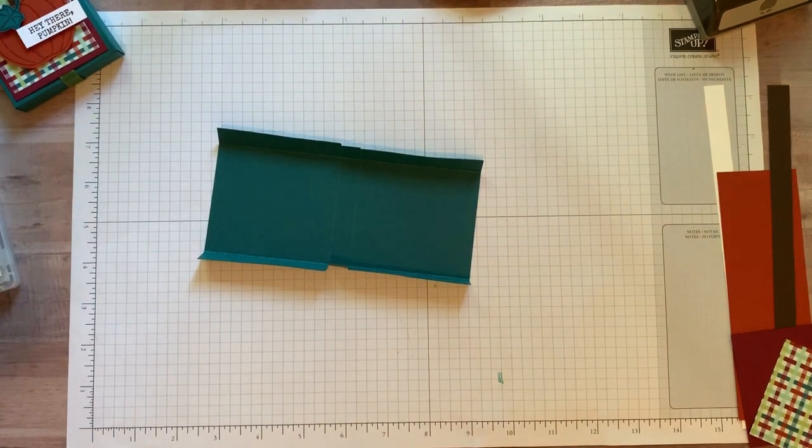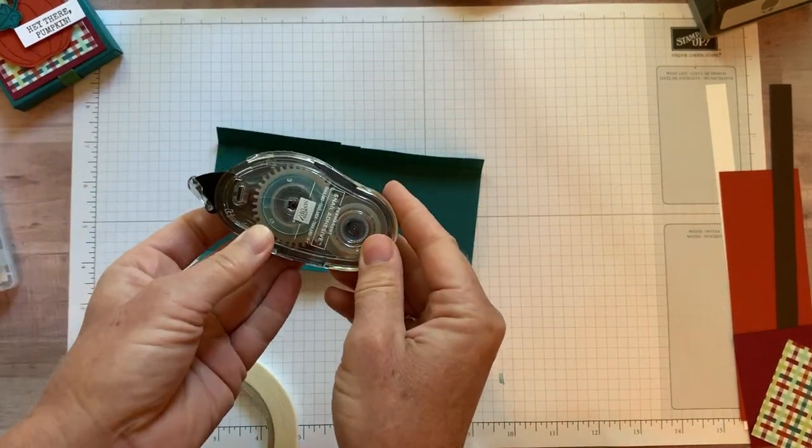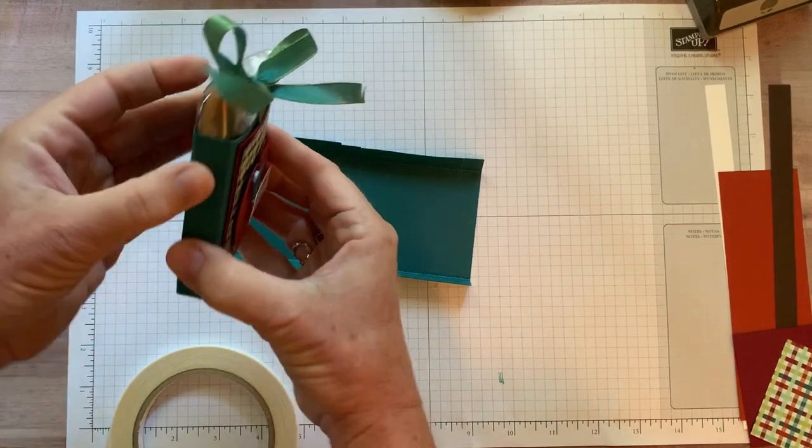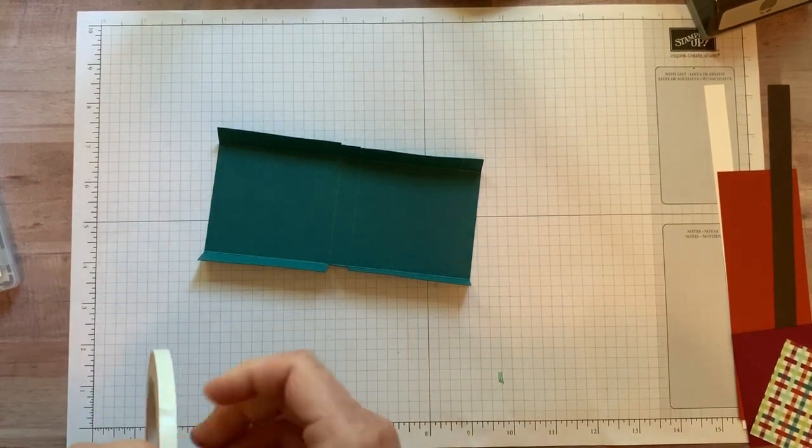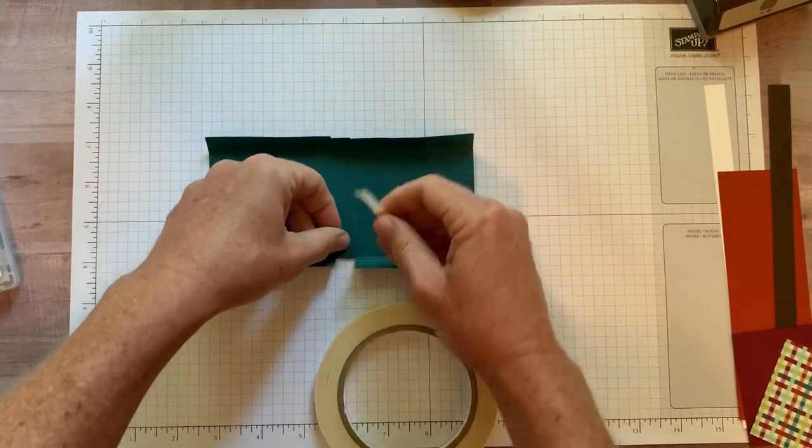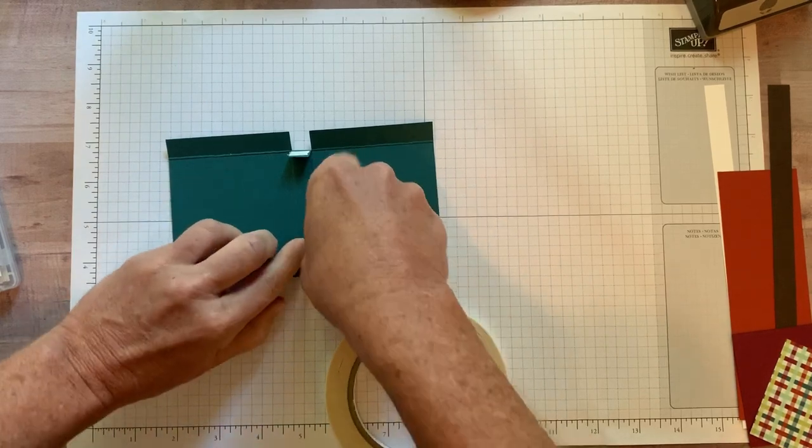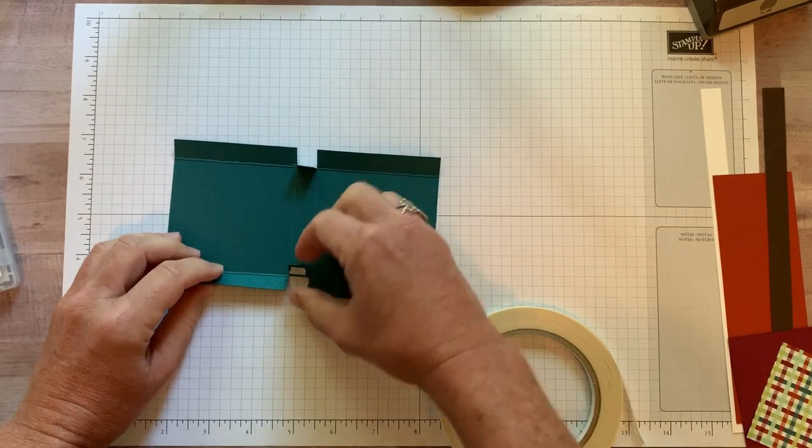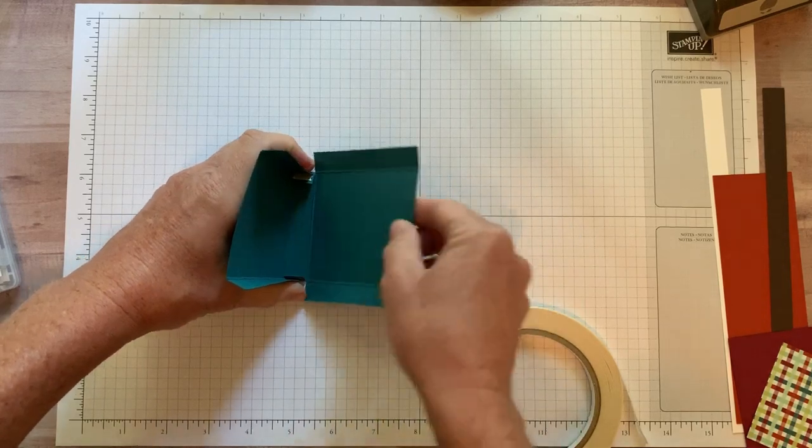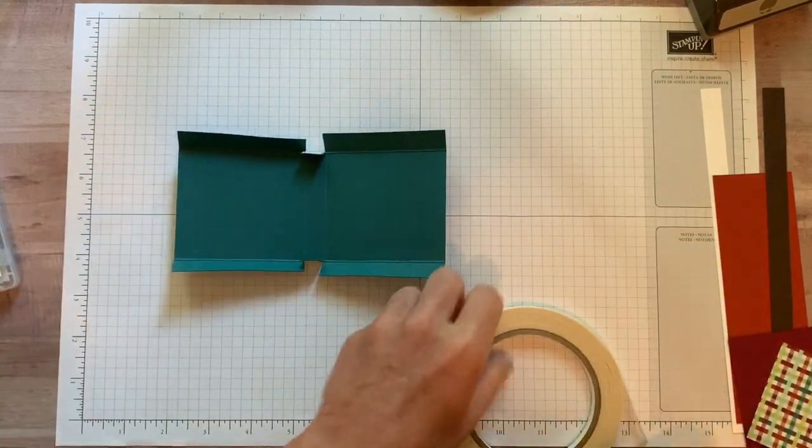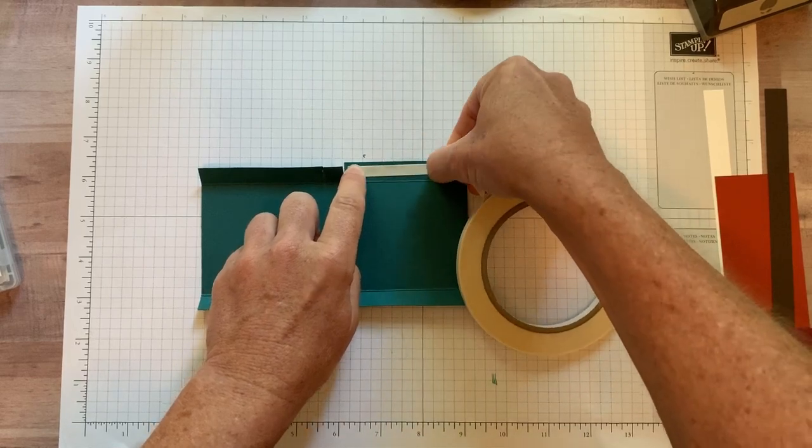Then where is my tear and tape right here? You really need to use a more substantial adhesive than the snail adhesive. When you go to put the treat in this box, it's a pretty tight fit in there. So it's going to kind of press against things. And I don't think it will hold up very well if you just use snail. So you want to use something a little bit stronger. So I've got my tear and tape here. So I'm going to put a little bit of adhesive on these flaps right here.